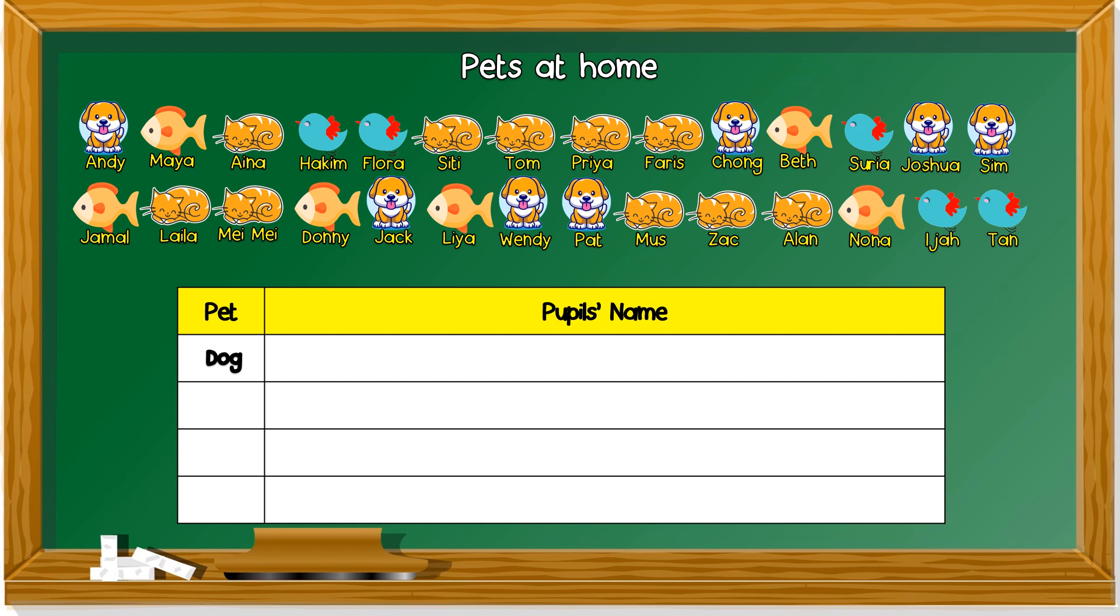So, let's count how many dog. One, this dog belongs to Andy. Another dog belongs to Chong. One more, Joshua. Another one belongs to Sim. Jack. Wendy. Any more? Yes. Pet.